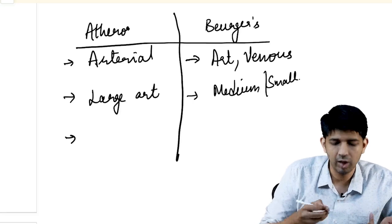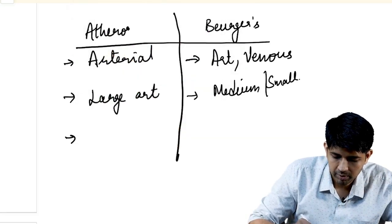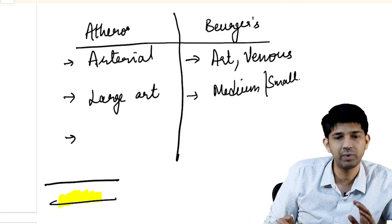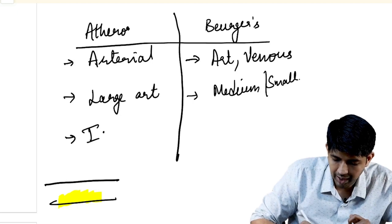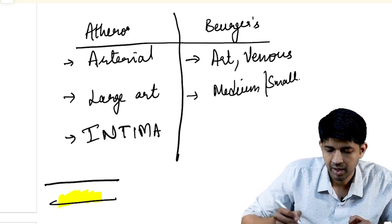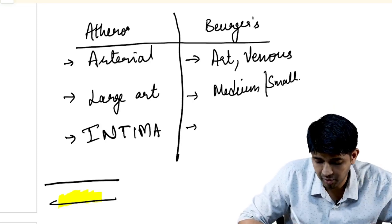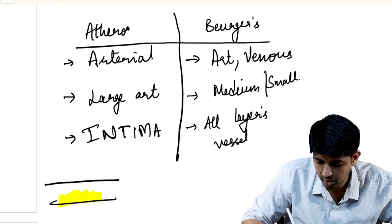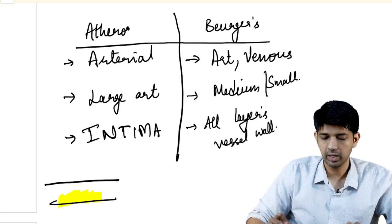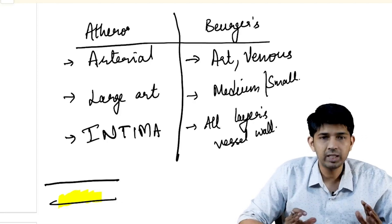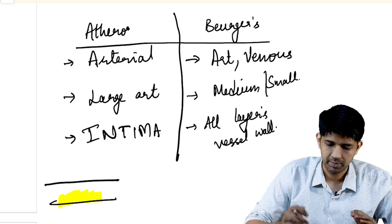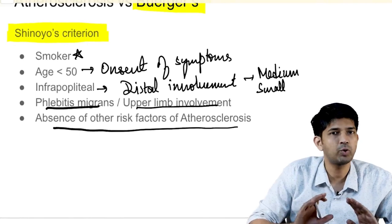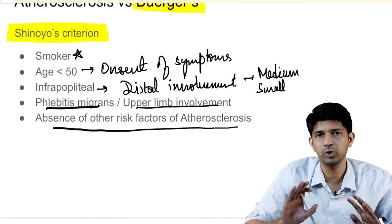Another differentiator is which layer of the artery is involved. In atherosclerosis, the plaque forms on the inside and only involves the tunica intima — it does not involve the vessel wall itself. In Buerger's disease, all layers of the vessel wall are involved. Shinoyer's criteria remain the most important tool for distinguishing Buerger's disease from atherosclerosis in your exam.